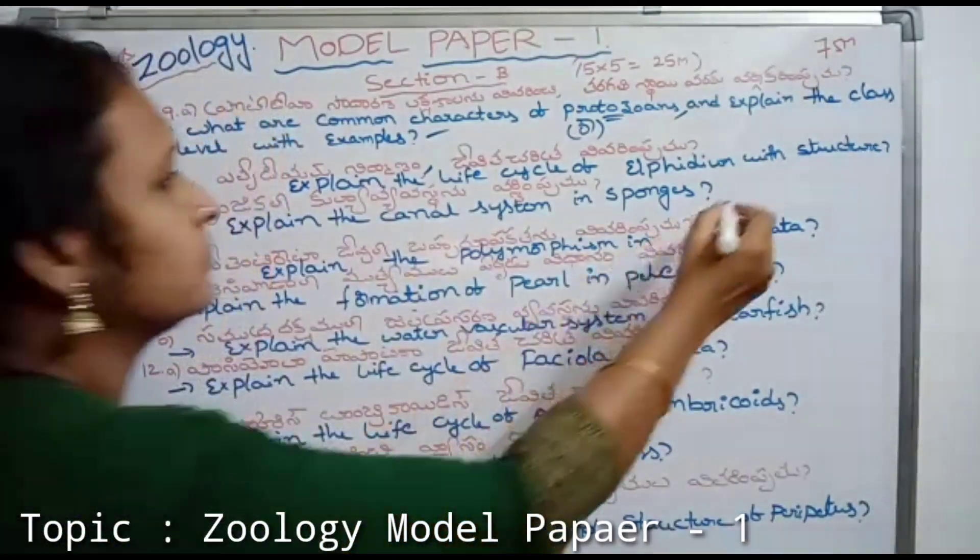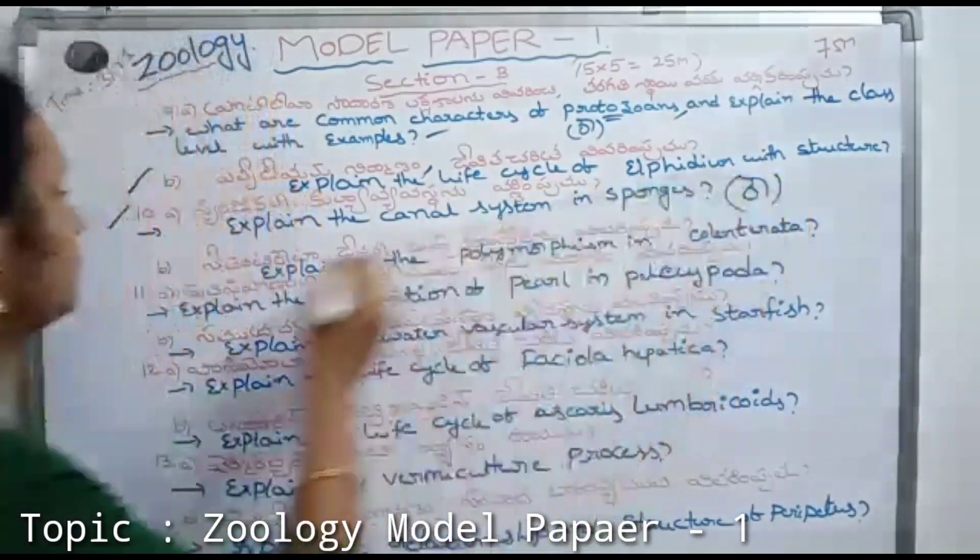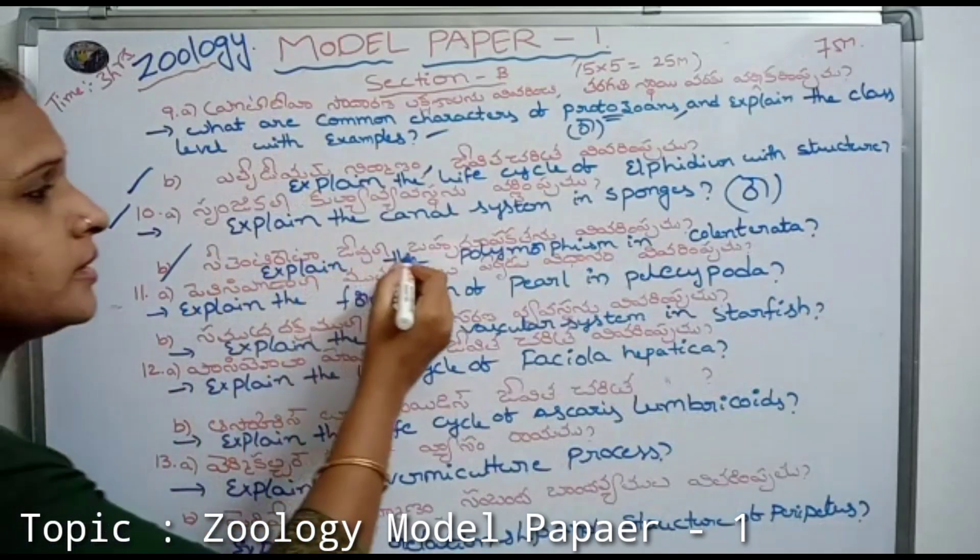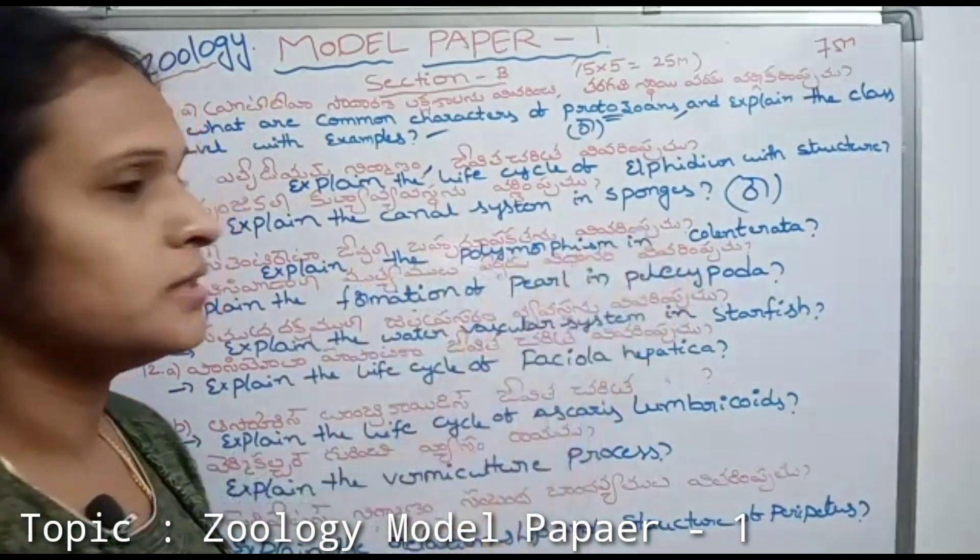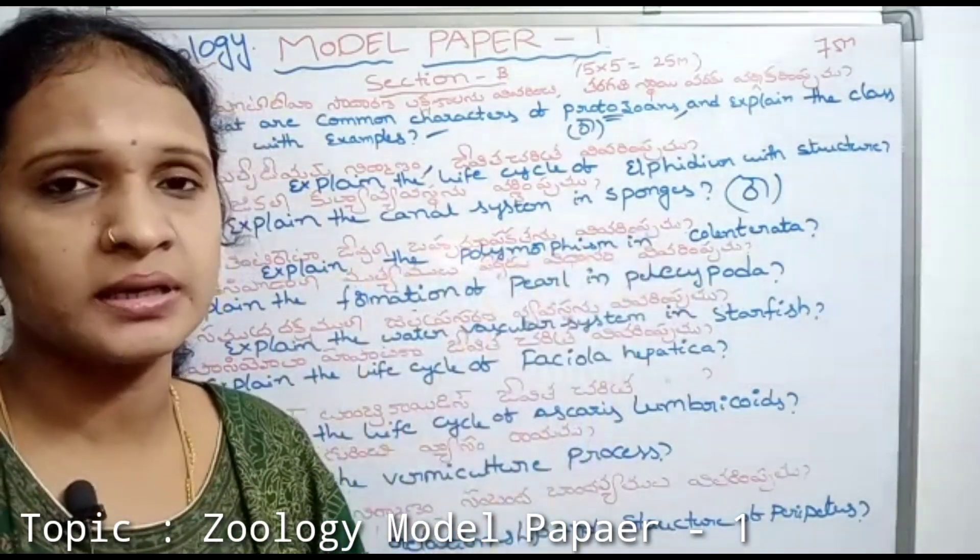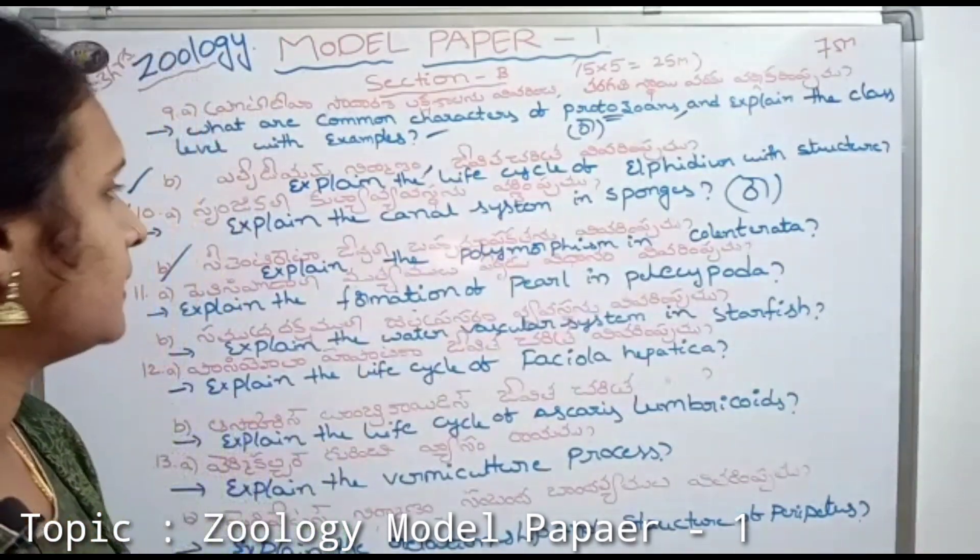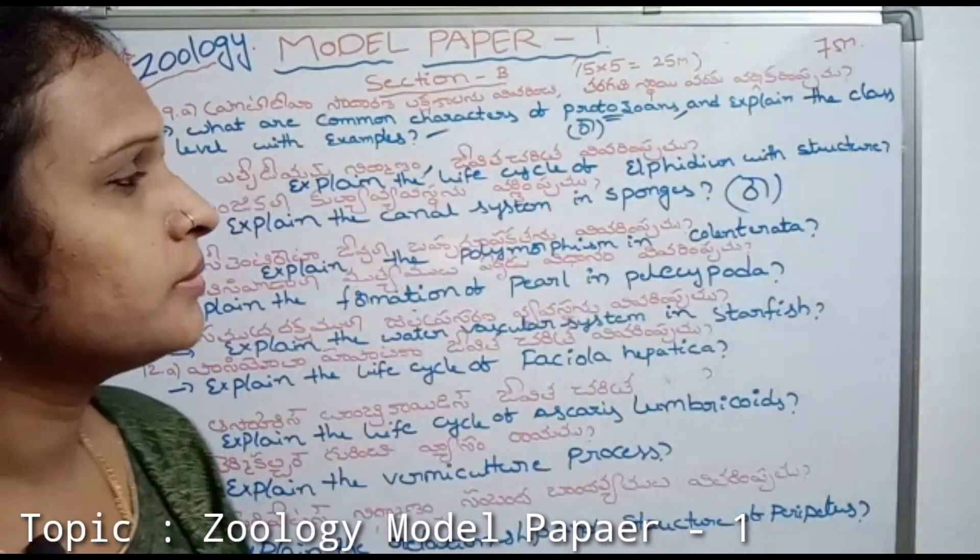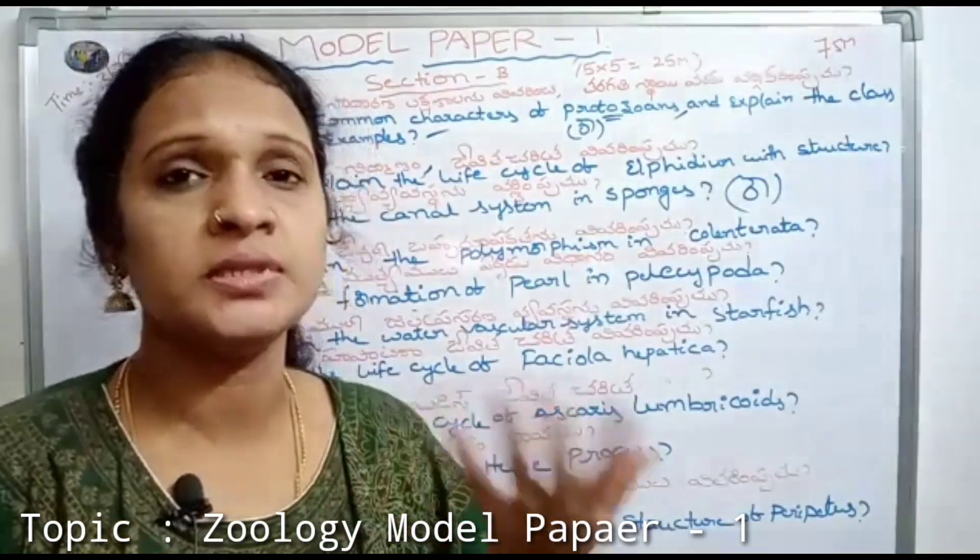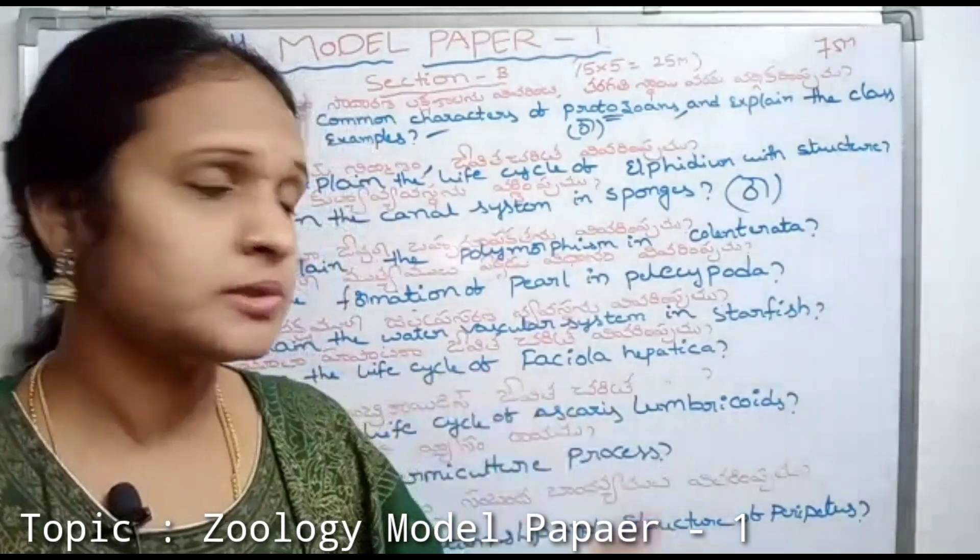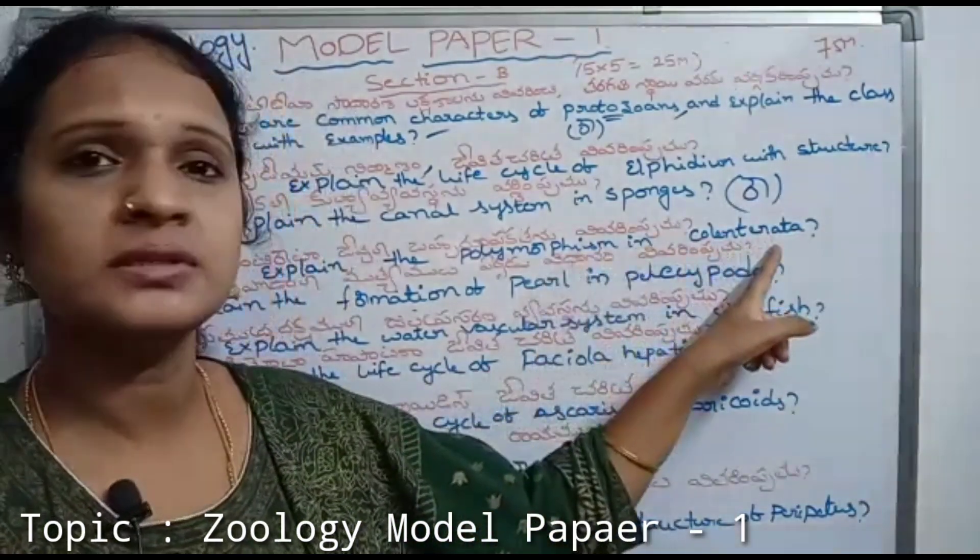And explain the polymorphism in cnidaria. Polymorphism means different shapes. So explain the polymorphism in cnidaria.